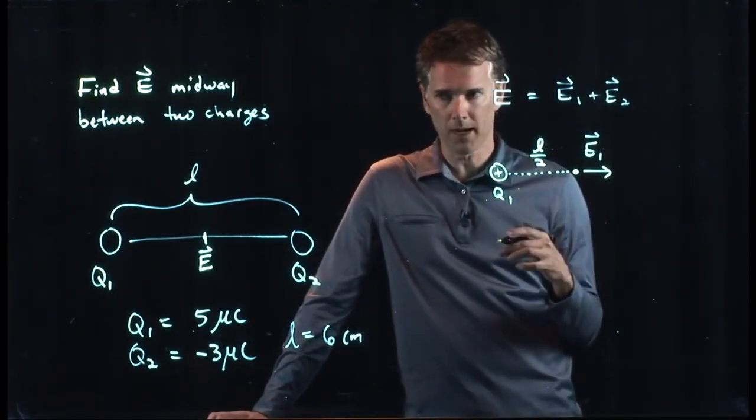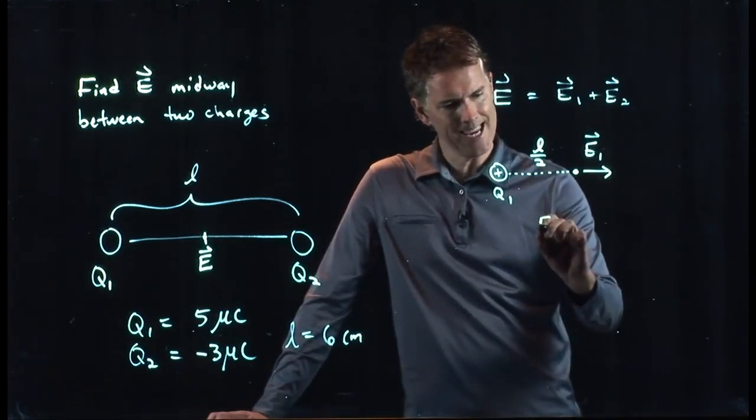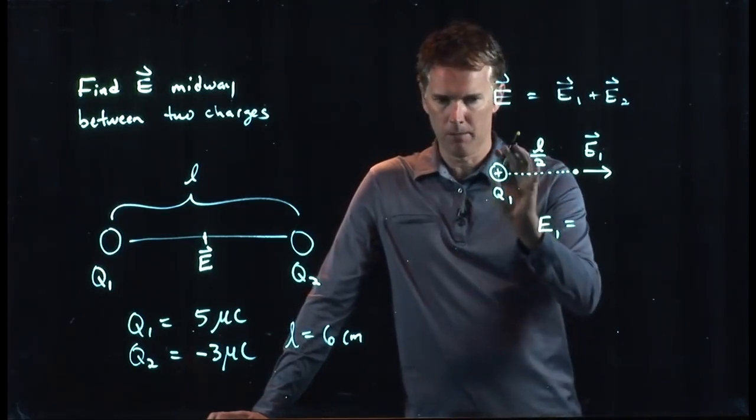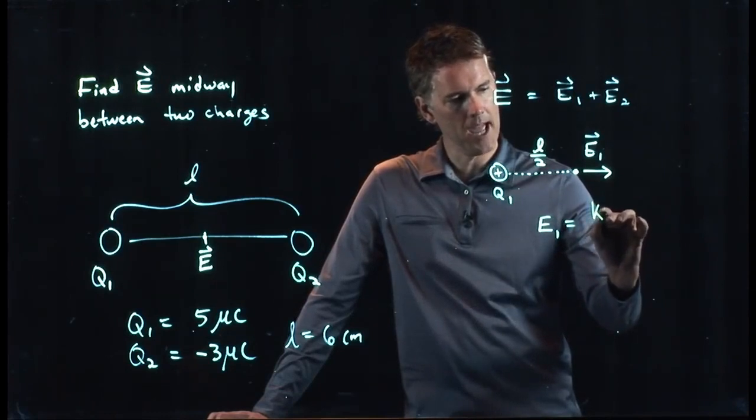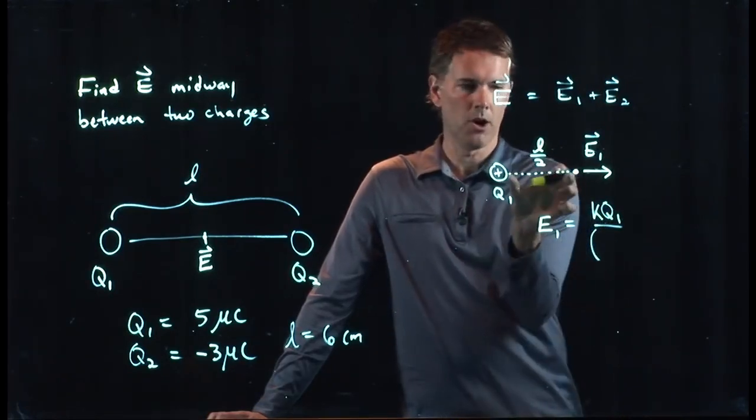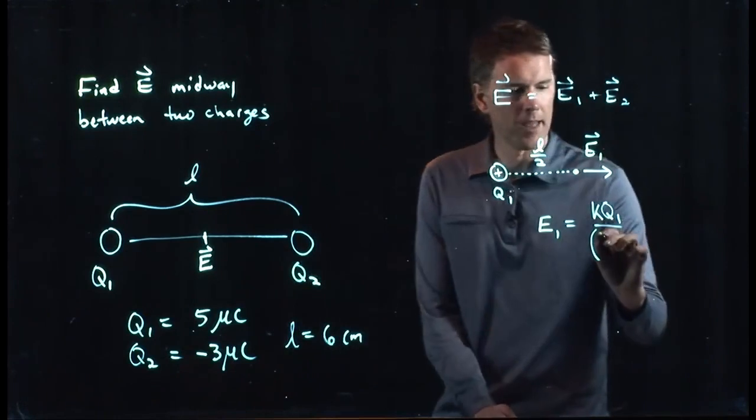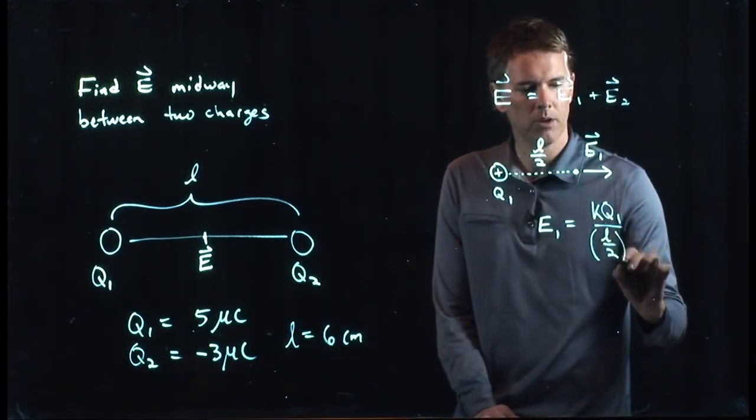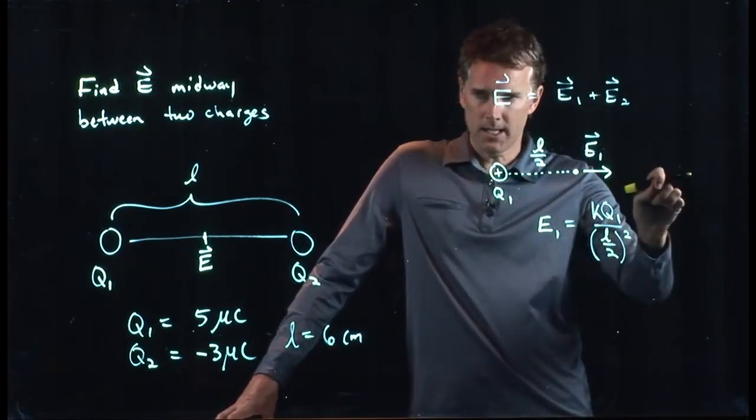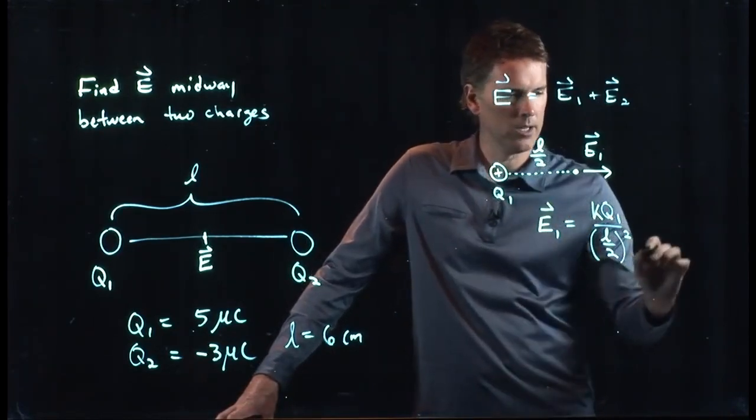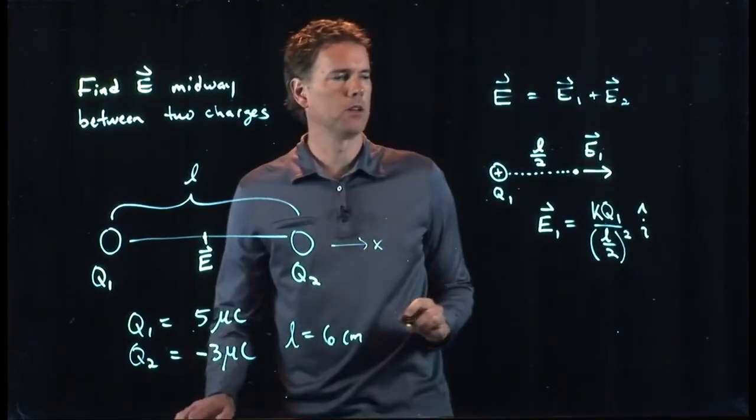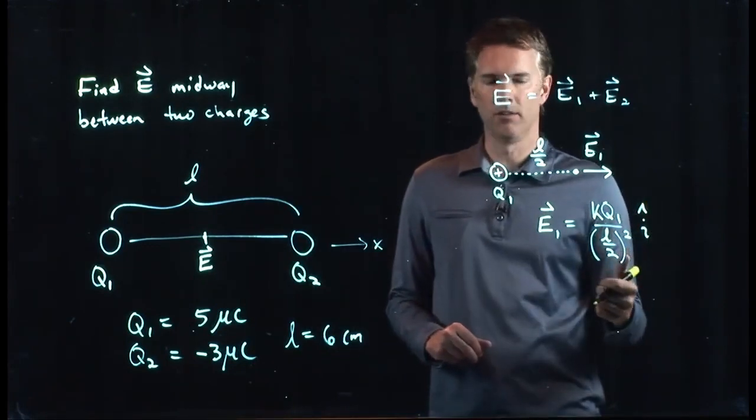We also know the strength of the E field because E field is KQ over R squared from a point charge, and so it just becomes KQ1 divided by R squared. But R is how far are you from the point charge, and so that becomes L over 2 quantity squared. That is pointing to the right and so we need to give a direction to it, i hat. We'll call this the X direction. So to the right is positive. That's an i hat.